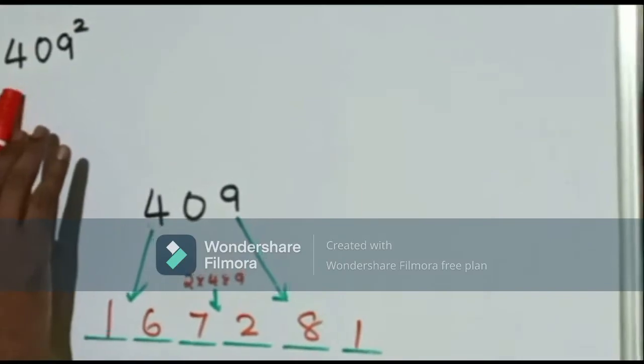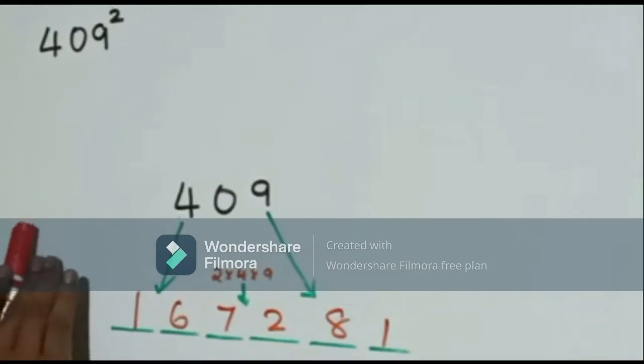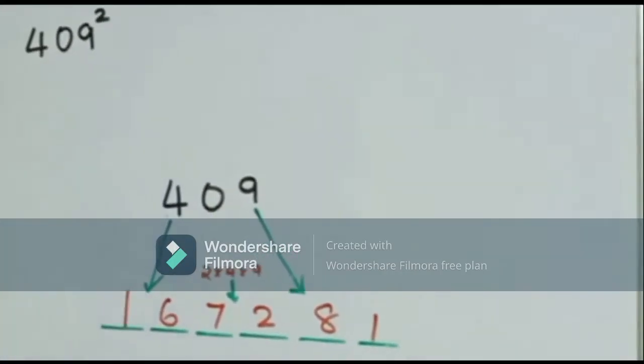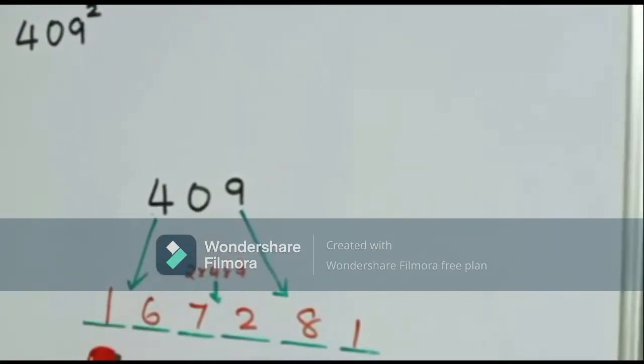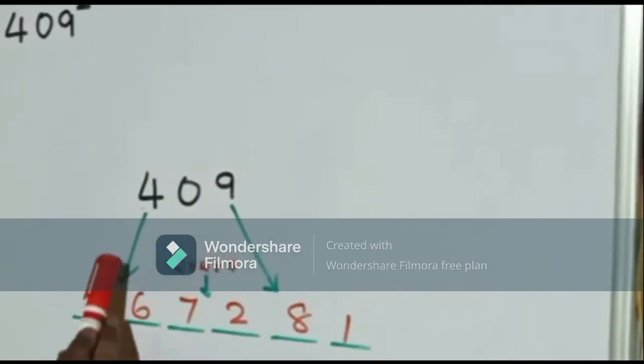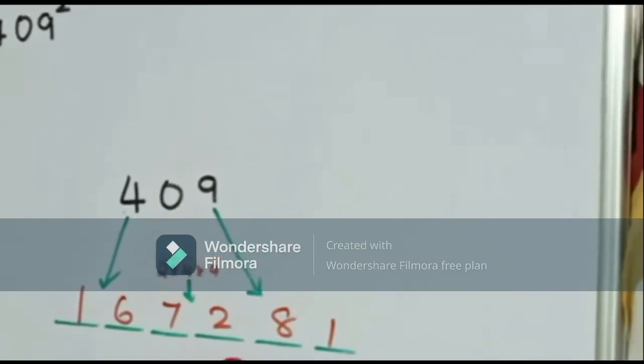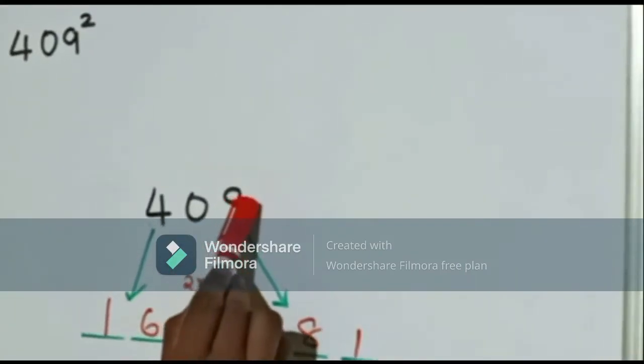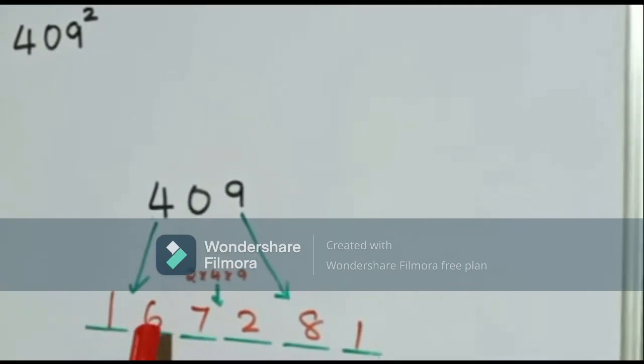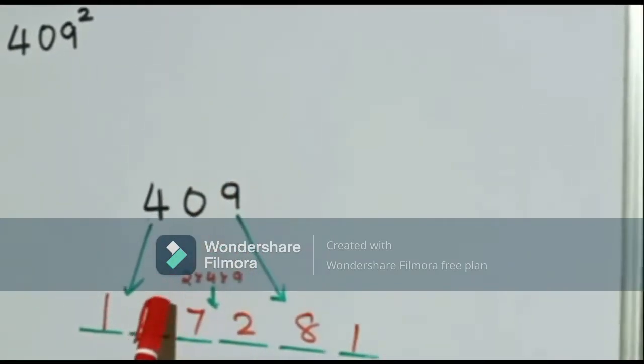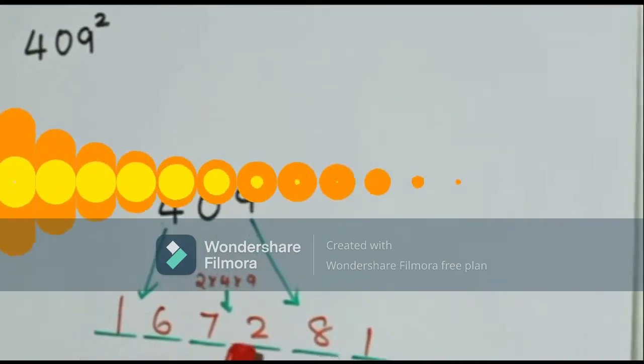With this trick we can find the square of a three-digit number in which the tens digit is 0. We take the square of 409. The first two digits will be the square of 4 which is 16. The last two digits of the answer will be the square of the last digit which is 9 square which is 81. The middle two digits will be twice the product of the first and the last term which is 2 times 4 times 9 which is 72. And the answer is 167281.